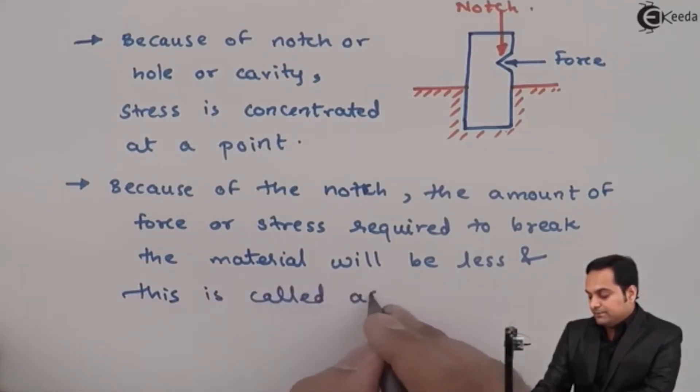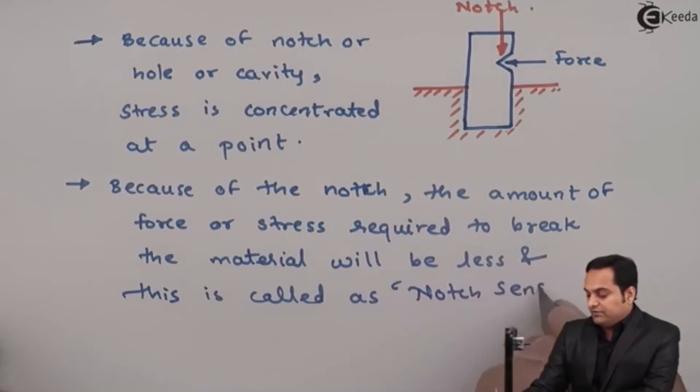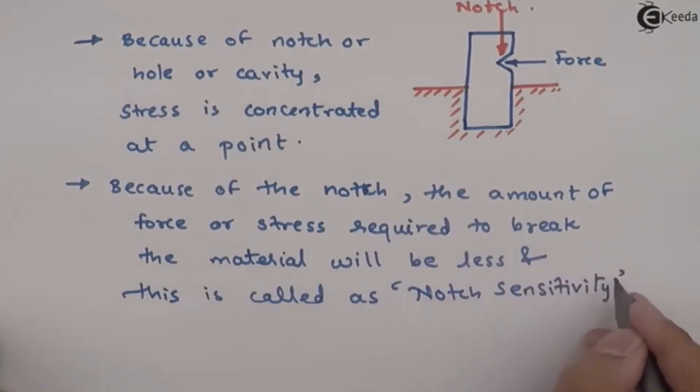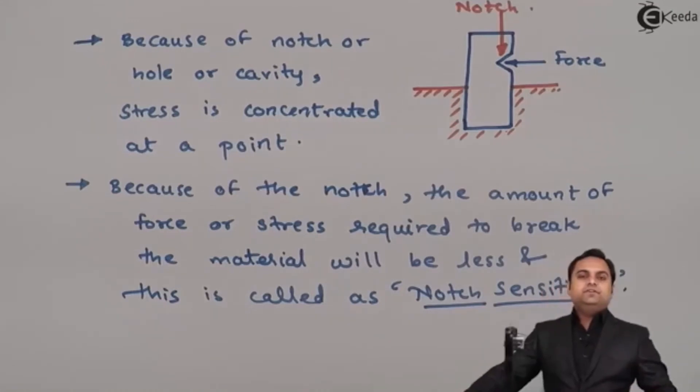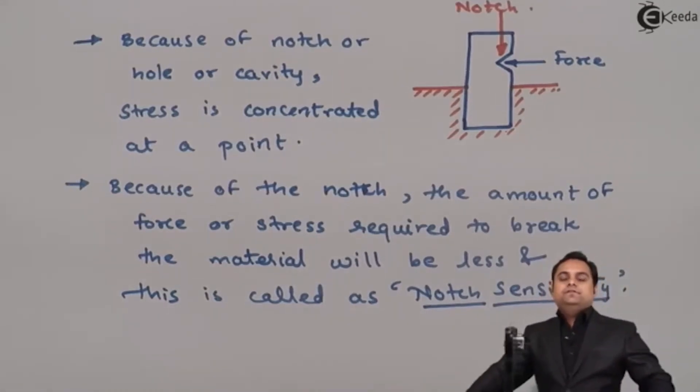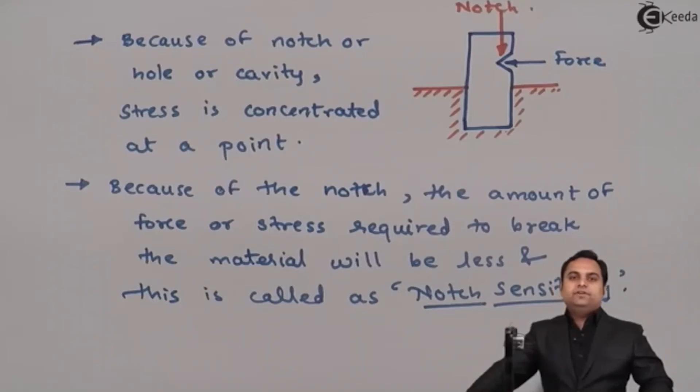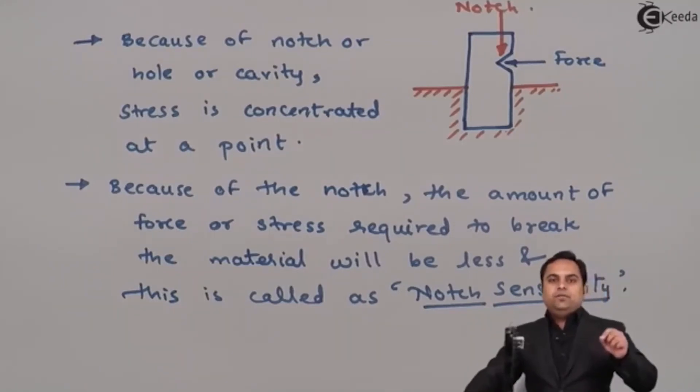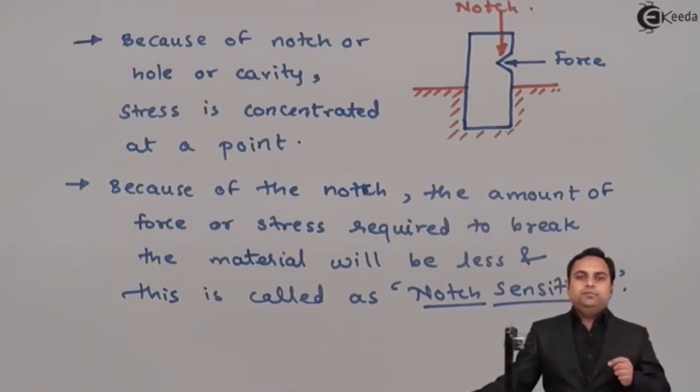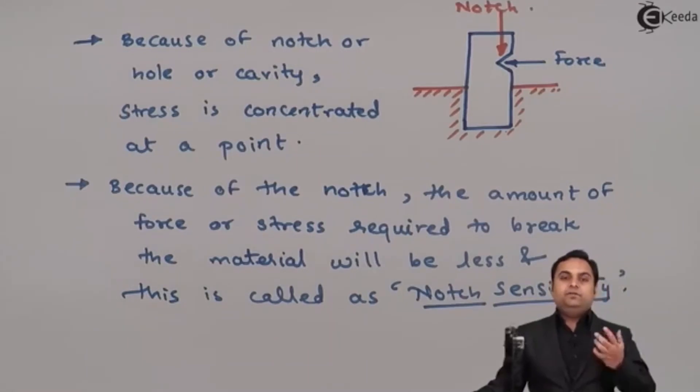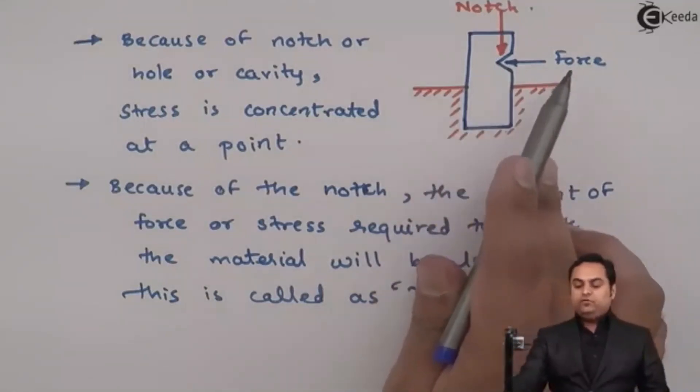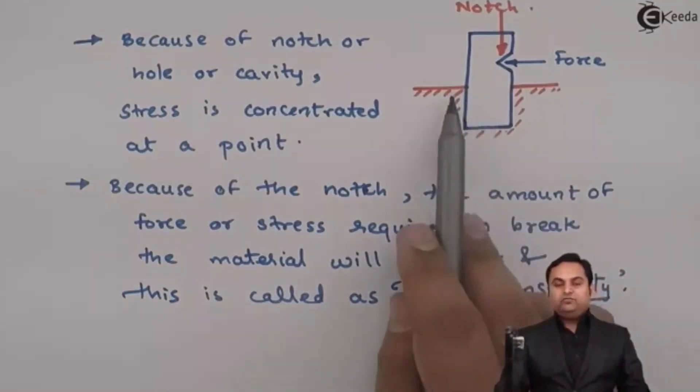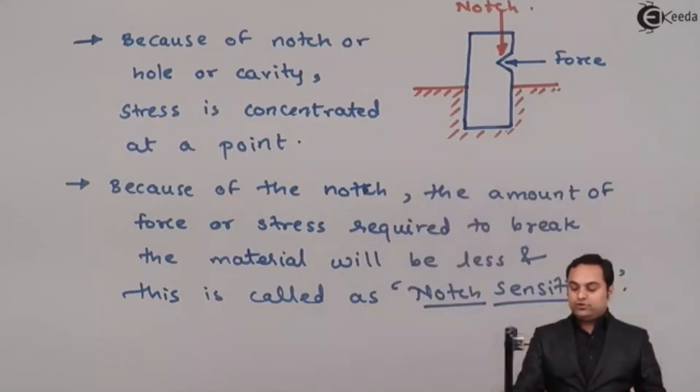Notch sensitivity is related to stress concentration. Wherever stress is concentrated, the amount of force required to break the metal or material will be less because stress is concentrated at a point. On that point, if force is applied, the material will break at a less value of force or stress.